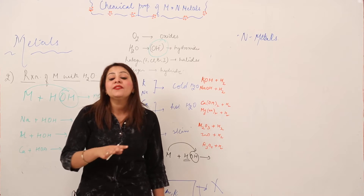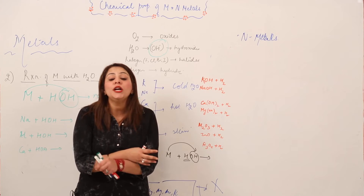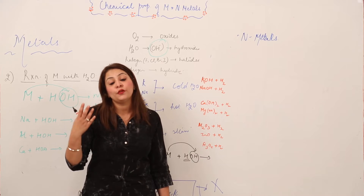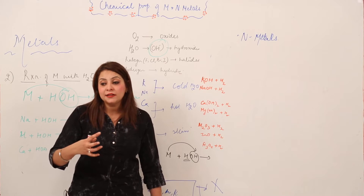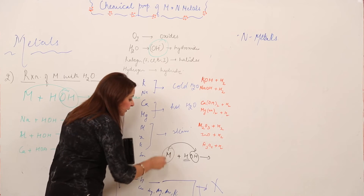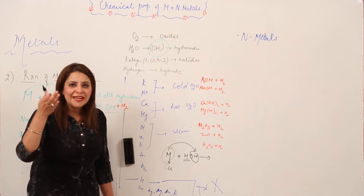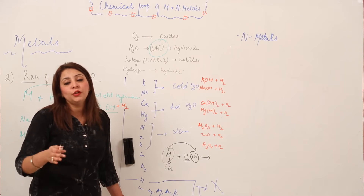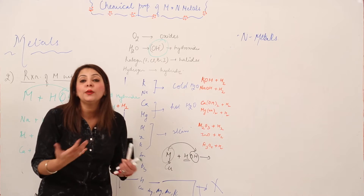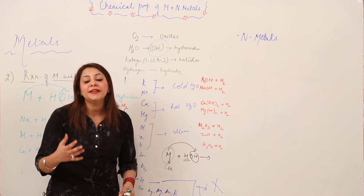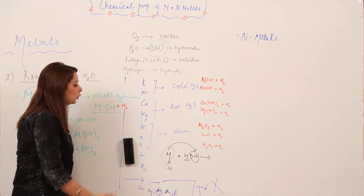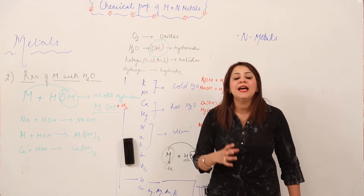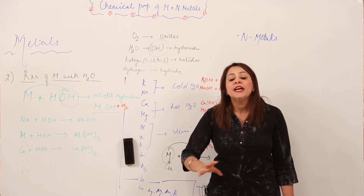If they are not able to displace or reduce hydrogen, that means they are not going to react with water. Because any element that needs to react with water needs to displace hydrogen, and for that displacement, reduction is an important part. Copper is placed below hydrogen, so how can it reduce it? That is why copper, mercury, silver, gold, and platinum do not react with cold water, boiling water, nor with superheated steam. Their reactivity is too low to displace or reduce hydrogen in order to combine with the hydroxide ion.